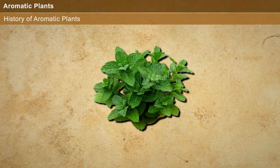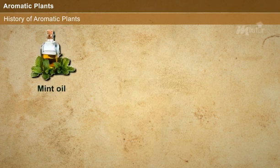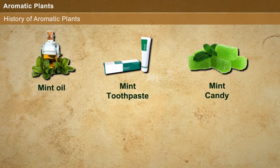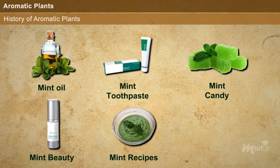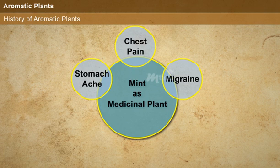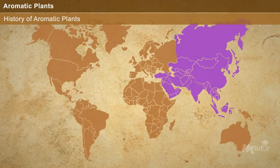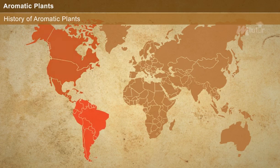Mint is a perennial herb, binomially called Mentha piperita, belonging to the family Lamiaceae. Mint oil, that is menthol, is used as a main ingredient in toothpaste, candy, and beauty products, while the leaves are used in many recipes either in fresh or dried form. It is also used as a medicinal plant for several problems like stomach ache, chest pain, migraine, acne, and burns. Mint is widely spread in Asia, Europe, North America, South America, Africa, India, and Australia.